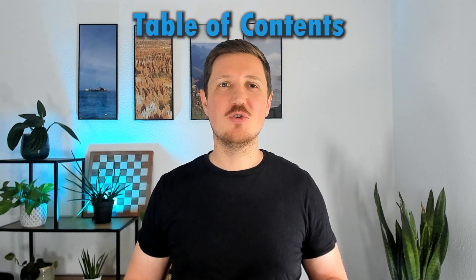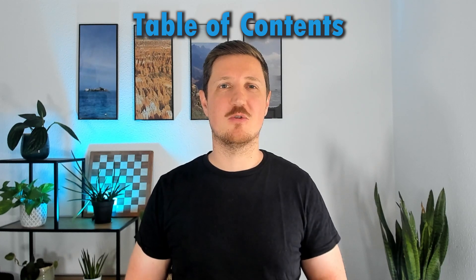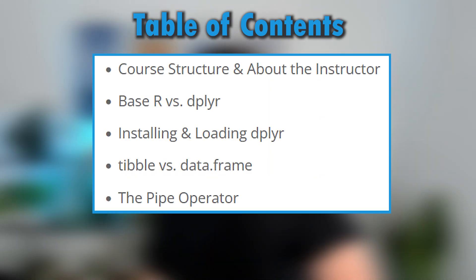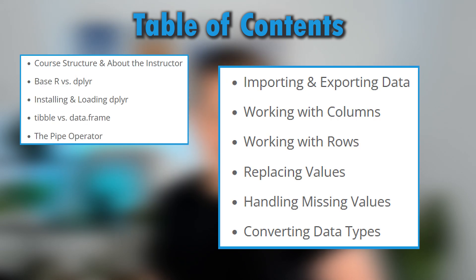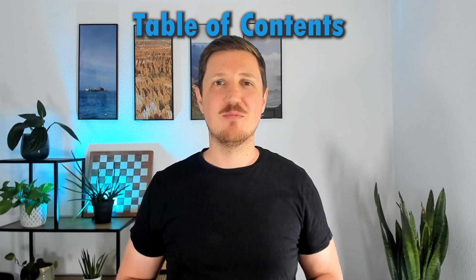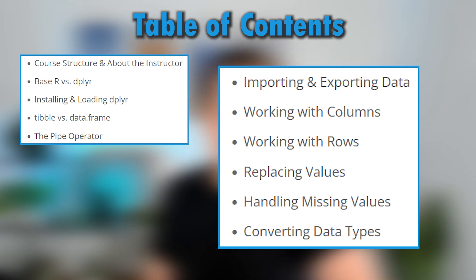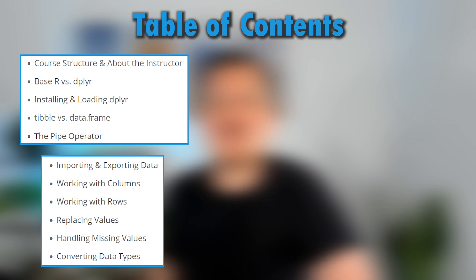Here are a few more details about the content of the course. We start by setting up the dplyr basics: what advantages and disadvantages does dplyr have compared to Base R, and how do I use the pipe operator? Next, we'll work on common data manipulation tasks: how to import and export data, how to add, remove, reorder, sample, and rename columns and rows, how to replace values in a dataset, how to handle missing values, and how to deal with different types of data.